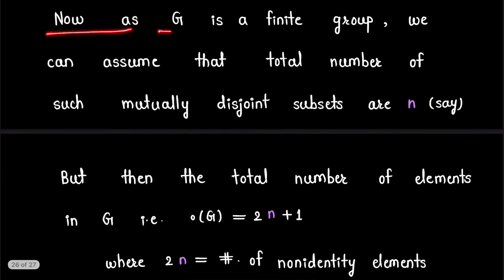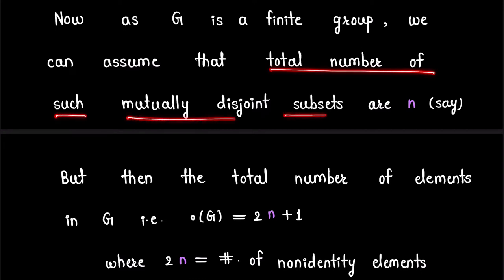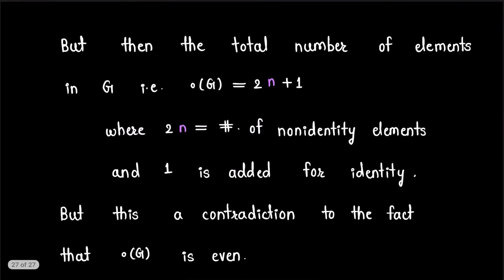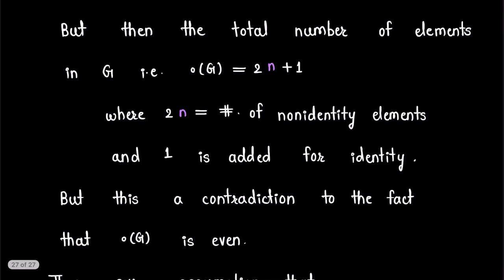Now as G is a finite group, we can assume that the total number of such mutually disjoint subsets is n, where n is some natural number. Because of this, the total number of elements in G...